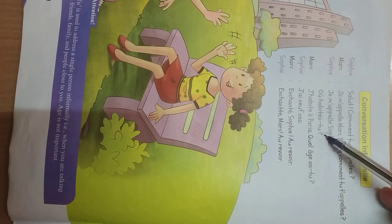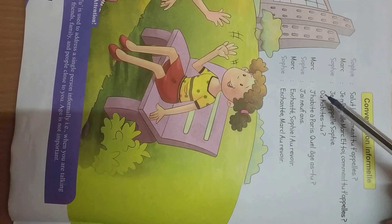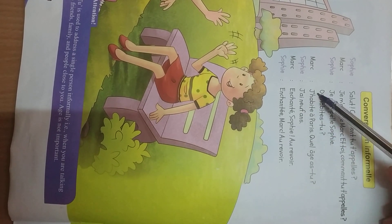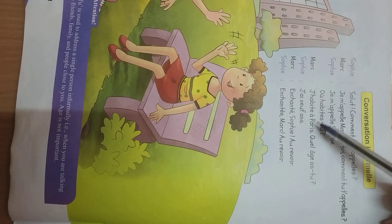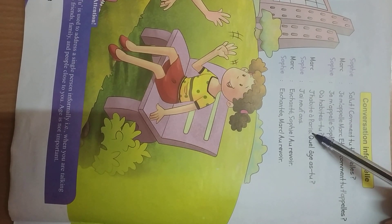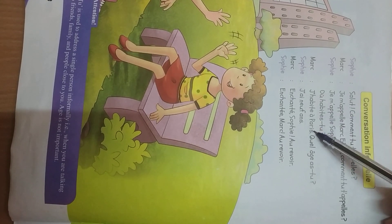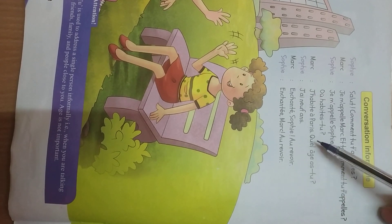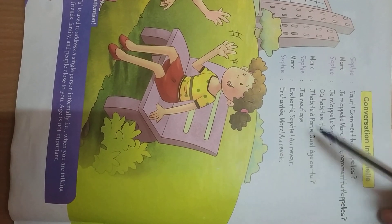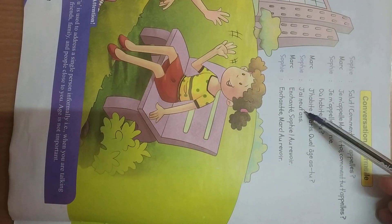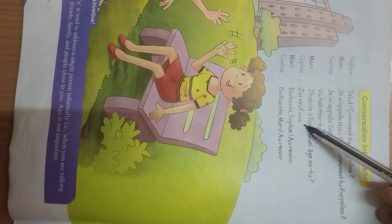Then Sophie asks, où habites-tu? Where do you live? Marc answers, j'habite à Paris. I live in Paris. Now this is pronounced in Paris. Pari. J'habite à Paris. I live in Paris. Quel âge as-tu? What is your age? J'ai neuf ans. I am 9 years old.